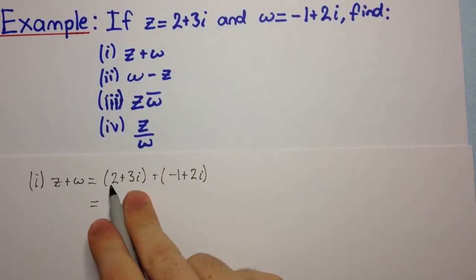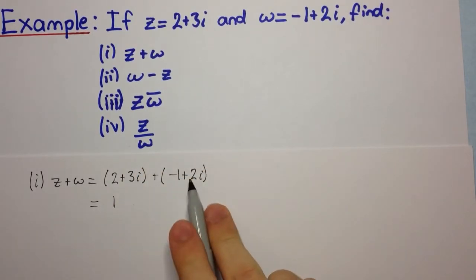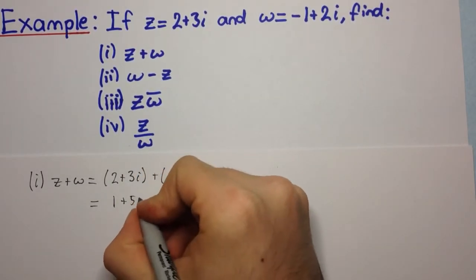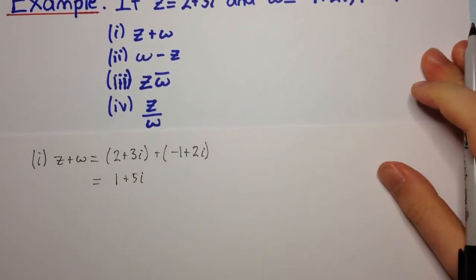We have 2 minus 1, which is 1, and we have 3i plus 2i, which is 5i. That's your final answer. As you can see, it's fairly simple.